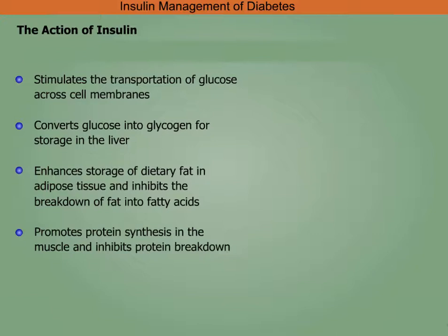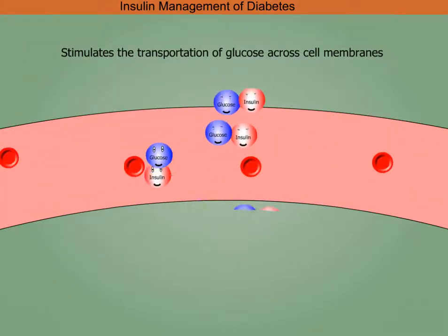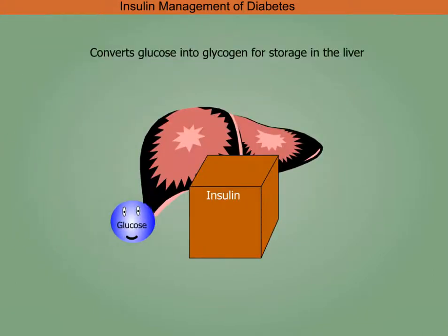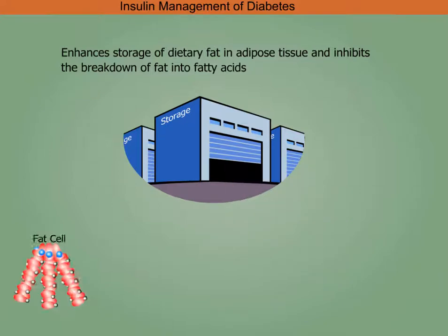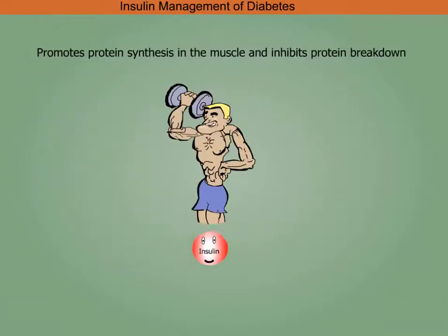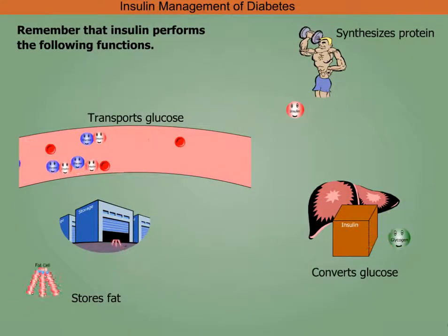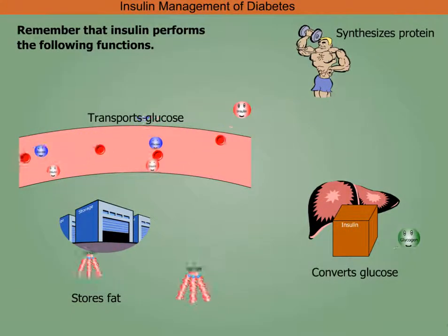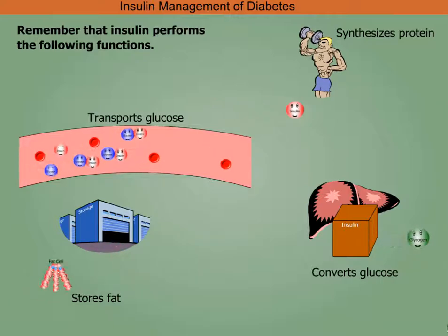The action of insulin: it stimulates the transportation of glucose across cell membranes, converts glucose into glycogen for storage in the liver, enhances storage of dietary fat in adipose tissue, inhibits the breakdown of fat into fatty acids, promotes protein synthesis in the muscle, and inhibits protein breakdown.